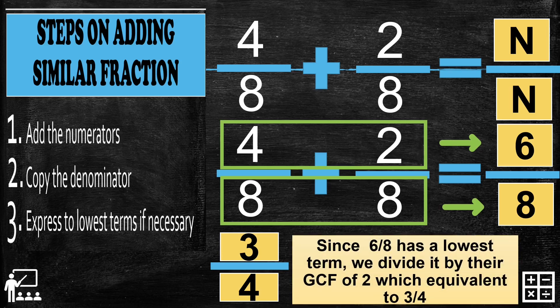We divide 6 over 8 by their GCF of 2, which gives 3 fourths. If you want to know how to reduce a fraction to lowest terms, just click on the suggested videos above. For this example, since 6 over 8 has a lowest term, we divide by their GCF of 2, which is equivalent to 3 fourths. So the answer is 3 fourths.